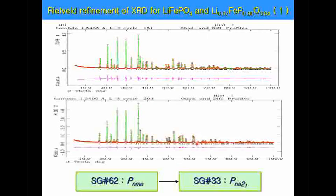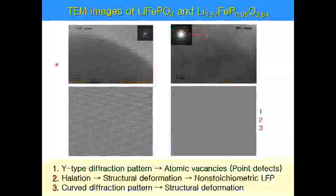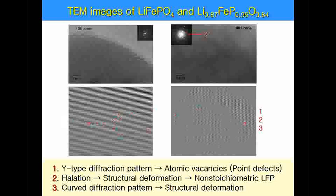By analysis of crystal space groups, normal LFPs are in space group number 62, but our material is in space group number 33. Based on XRD analysis, we can obtain the atomic ratio of each element in the crystal, and we can control the ratio of each element by adjusting experimental conditions. TEM analysis also proves that our crystal contains some imperfection in the lattice structure. Compared to the perfect diffraction pattern of normal LFP, we can see some grooves in the lattice and differences in the diffraction pattern, meaning some imperfection in the crystal.